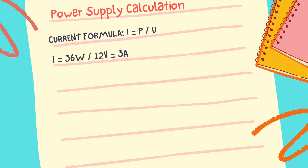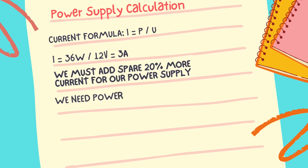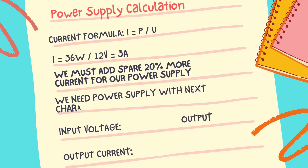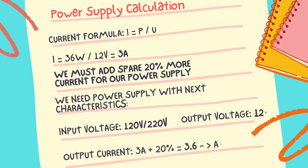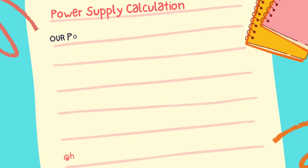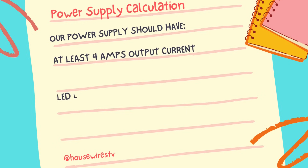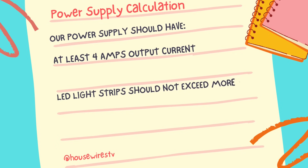Our power supply must have at least 20% greater ampacity than our load — in this case, the LED strip. It's always a good idea to choose a power supply with a slightly higher current rating than the calculated value to ensure it can handle the load comfortably. Adding 20% to 3 amps gives us 3.6 amps. Rounding up, our power supply must have at least 4 amps output current.